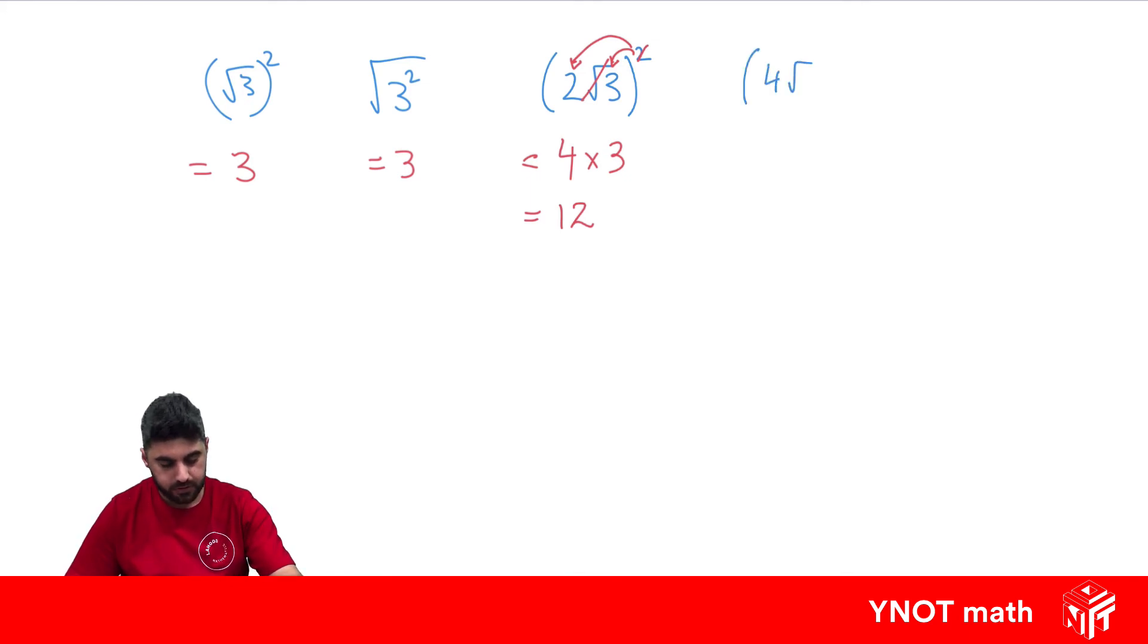About 4 root 12 squared. We can do something similar. Raise each term to the power. 4 squared is 16. Root 12 squared - the square and the square root cancel out and we're left with 12. And 16 times 12 is 192.